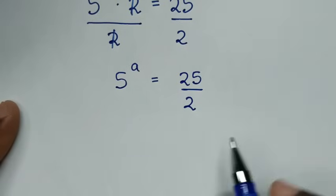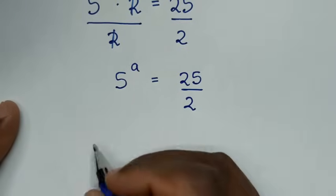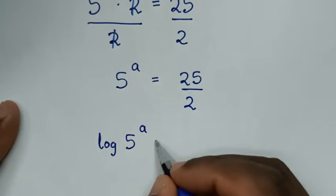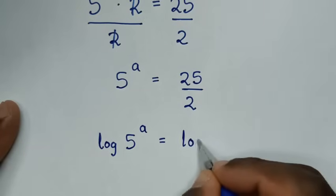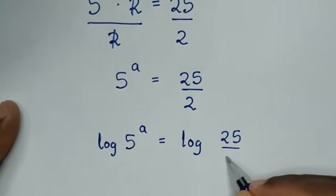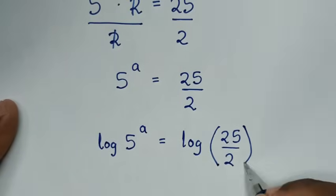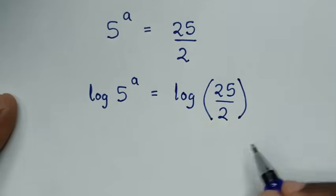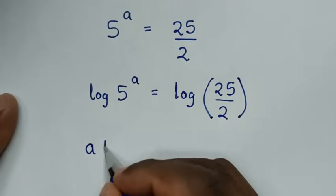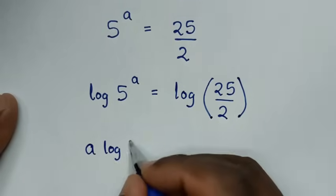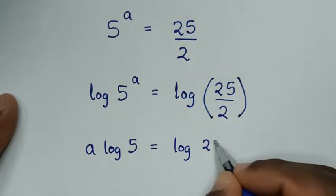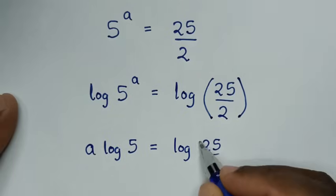In the next step we will apply log on both sides. So it will be log of 5 power a is equal to log of 25 over 2. Then the power of a moves down, so it will be a times log of 5 is equal to log of 25 over 2.